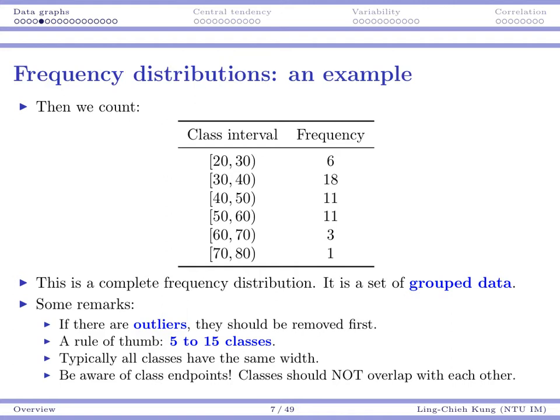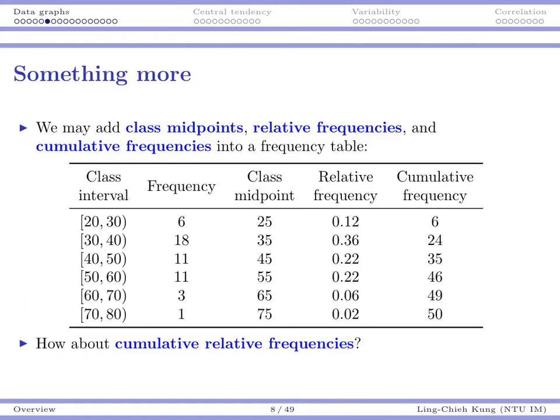Sometimes we may want to add some more things into a frequency table. Sometimes we want to add class midpoints, which just means the middle point of that interval. So for the first class that's 25, for the second that's 35. Sometimes we want to add relative frequency or just the proportion of numbers in that class.